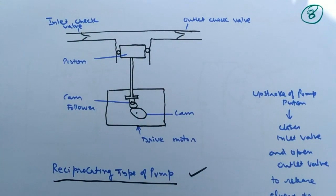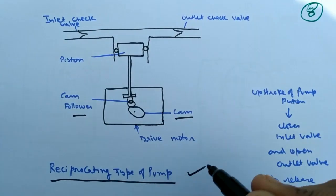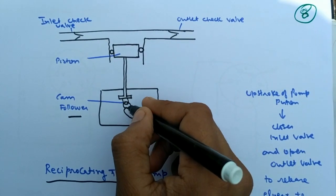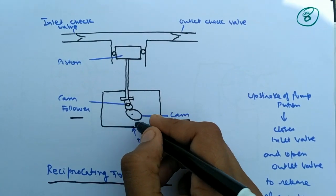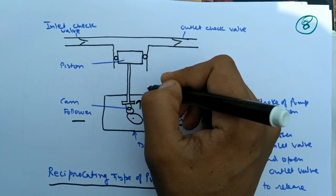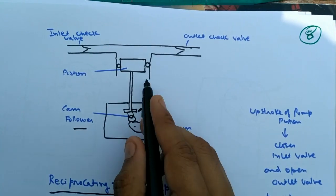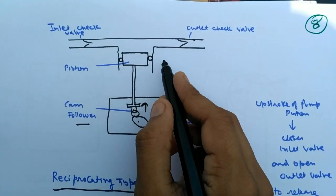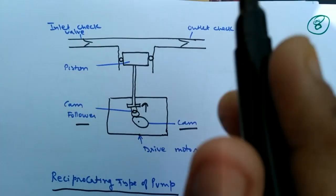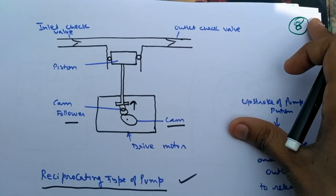The reciprocating type pump uses a cam-type mechanism. Pressure on one component pulls another down while low pressure lifts the other. Based on the position of the previous component, the upcoming component moves up or down. The piston up-and-down mechanism allows solvent entry to the column.